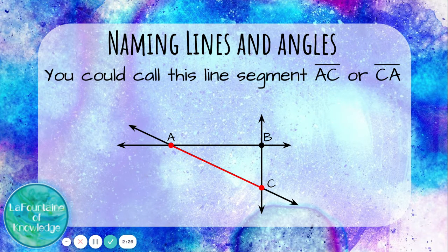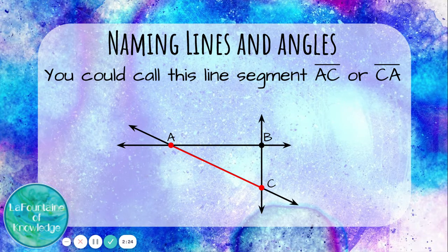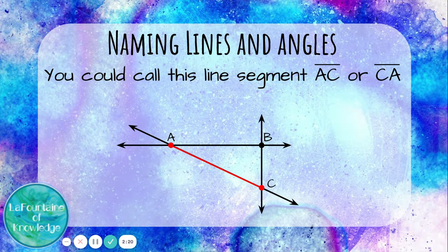You could call this line segment AC or CA. Notice the symbol above the letters doesn't have any arrows. That's the symbol for line segment.